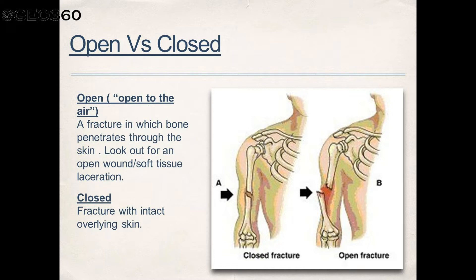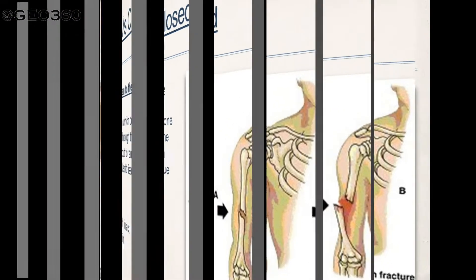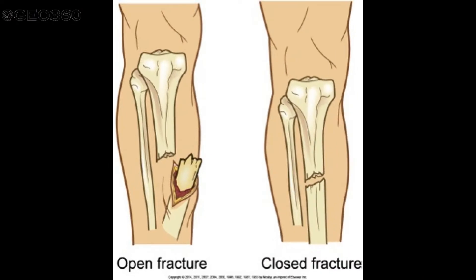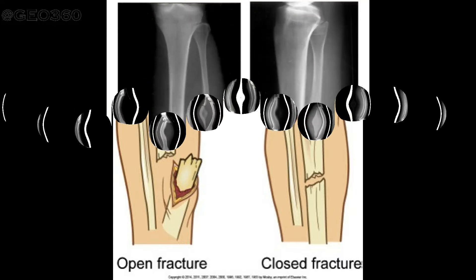In open fractures, also called compound fractures, the skin above the fracture is not intact. There is bleeding, the bone is exposed to the outside air and surface. Dirt, germs, etc. can enter via the wound, and the risk of infection is very high in these cases.